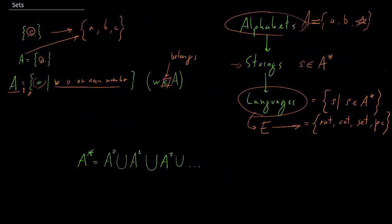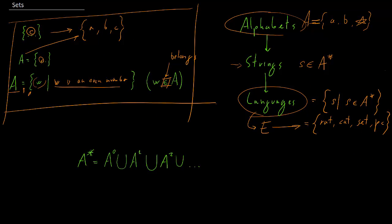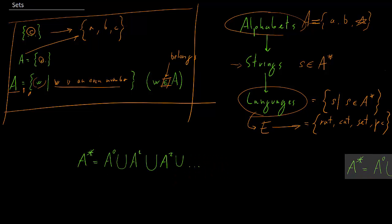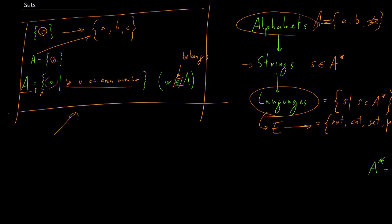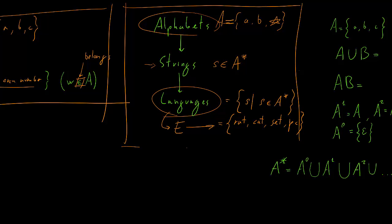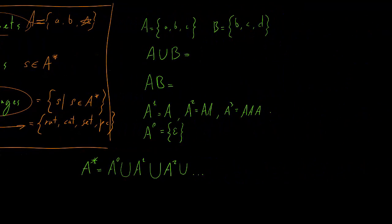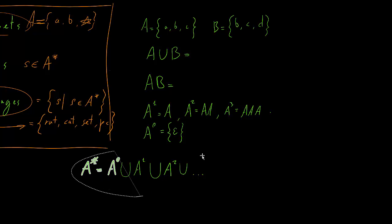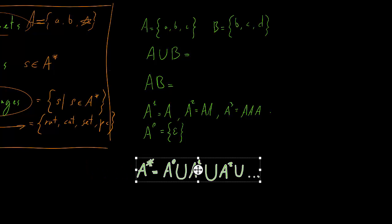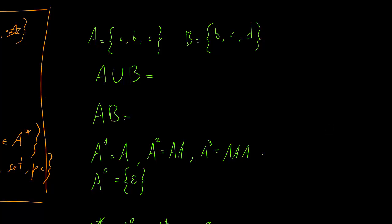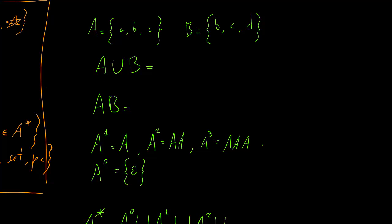So we saw what sets are, what they look like, and what sets we will be concerned with in our course. Now, operations on sets. You can build new sets from old sets using operators. The ones we will be using in this course are: the union operator, the concatenation operator (which can take the form of a dot, or nothing), and the Kleene star operator.